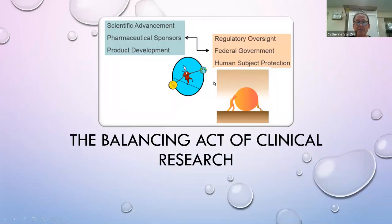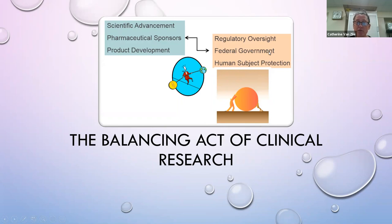The balancing act of clinical research involves, on one side, scientific advancement, pharmaceutical sponsors, and product development — the whole science of it. But on the other side, we have to balance regulatory oversight and the federal government's oversight, making sure that human subject protection is in place.